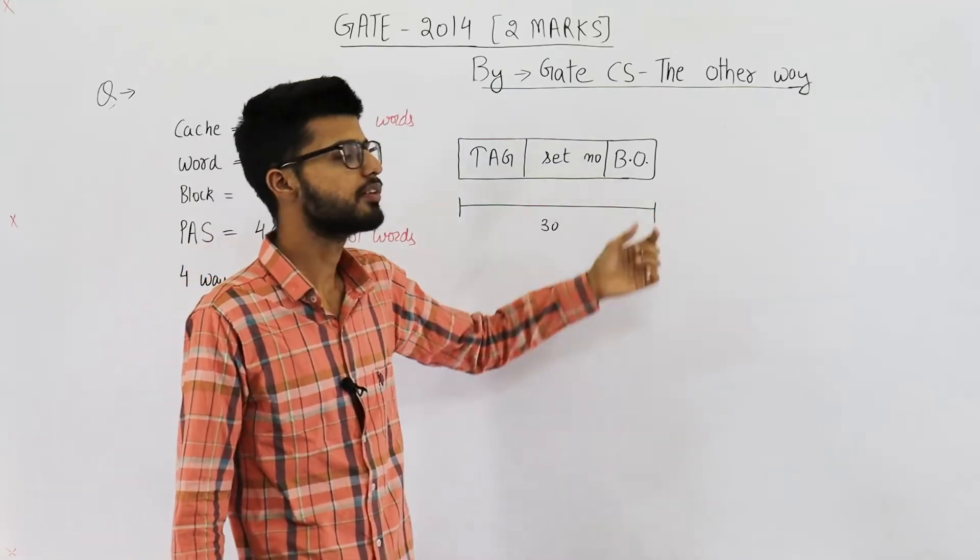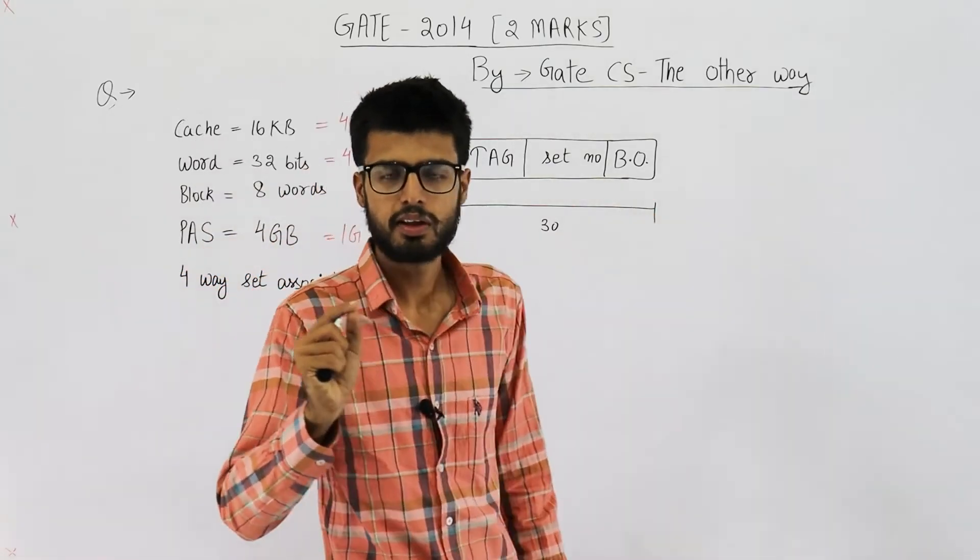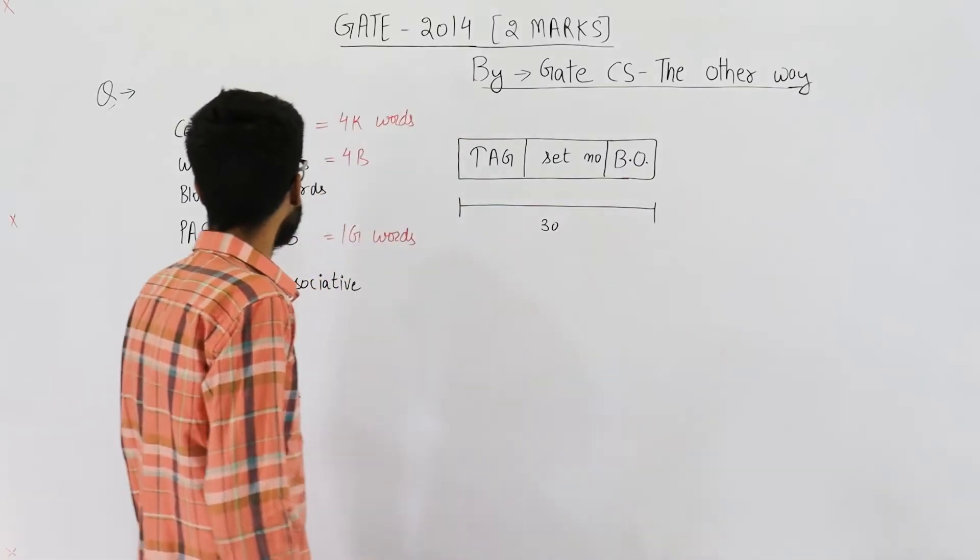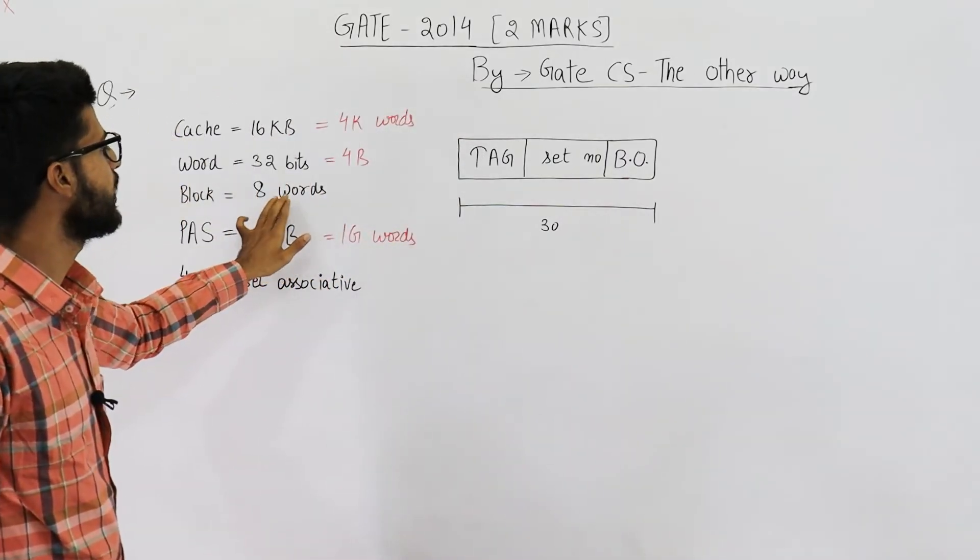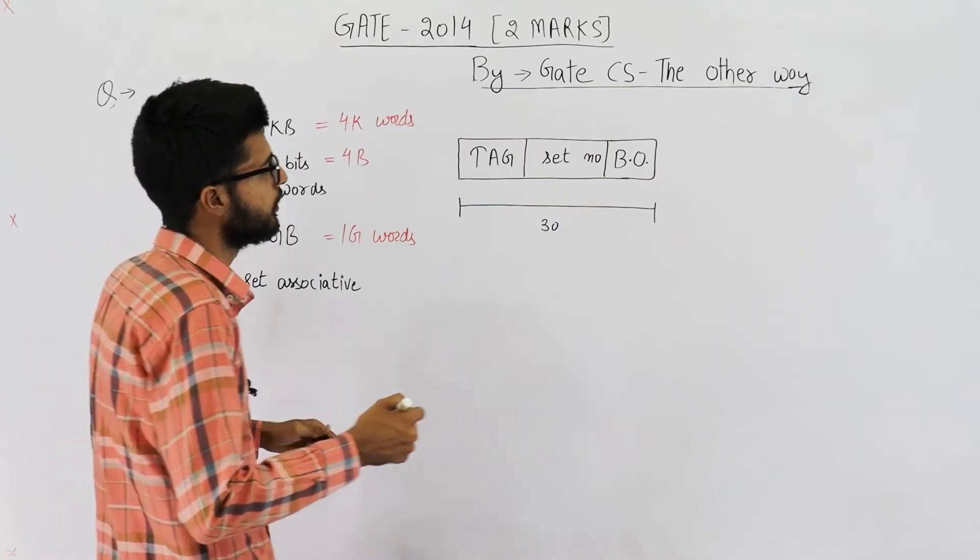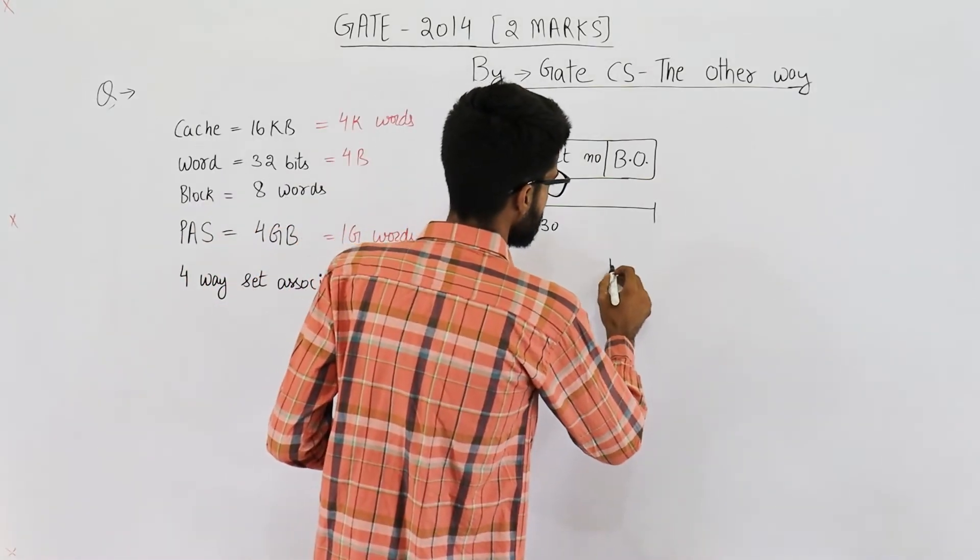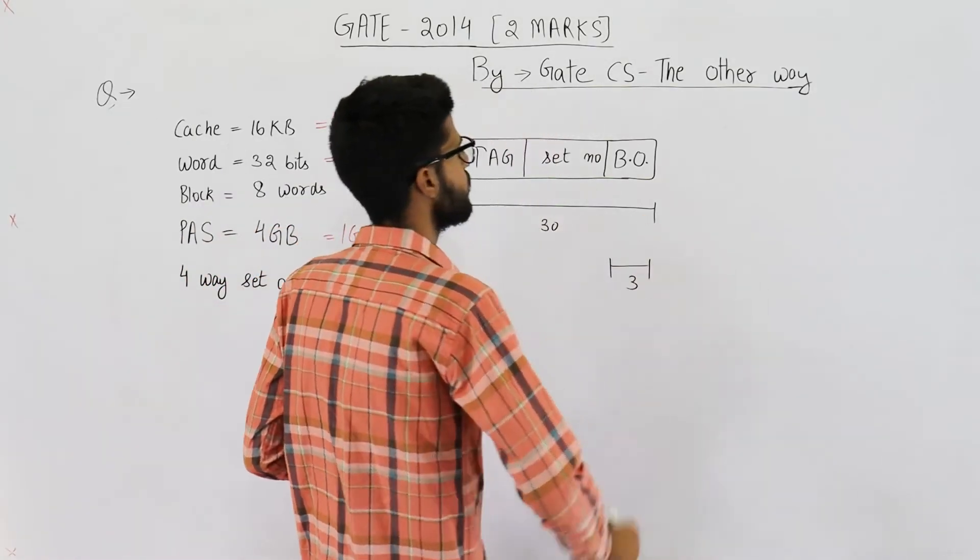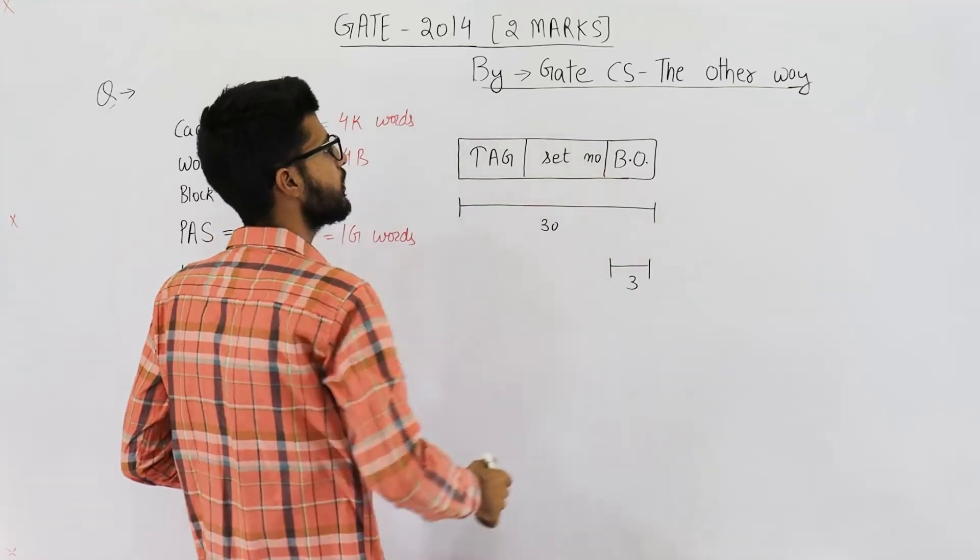Block offset is used to identify one word in some block. So the block has a total of 8 words, 8 means 2 raised to the power 3. So you can see this part will be 3 bits. Block offset here is 3 bits.